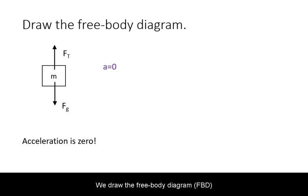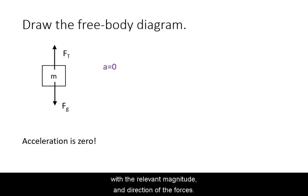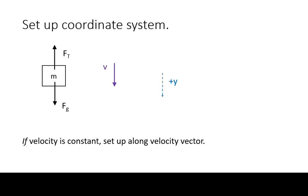We draw the free body diagram with the relevant magnitude and direction of the forces. We also take note that the acceleration in this case is zero. We set up our coordinate system. Because we don't have acceleration, our second best choice is to have the coordinate system in the direction of our velocity. Do not be afraid to rotate the coordinate system downwards in the direction of the velocity vector.